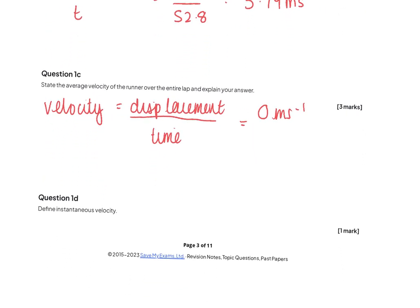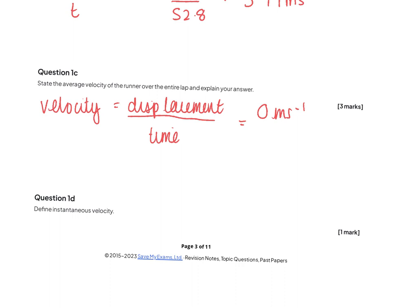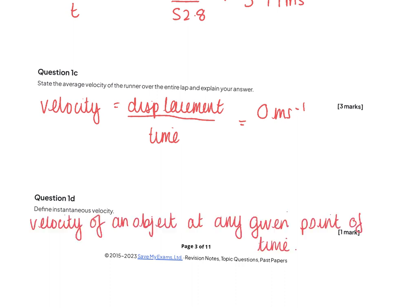Question 1d: define instantaneous velocity. The definition for instantaneous velocity is the velocity of an object at any given point in time. To help you remember, instantaneous just means instant — so at any point, for example t equals 3, after 3 seconds, what is his velocity at that point in time?